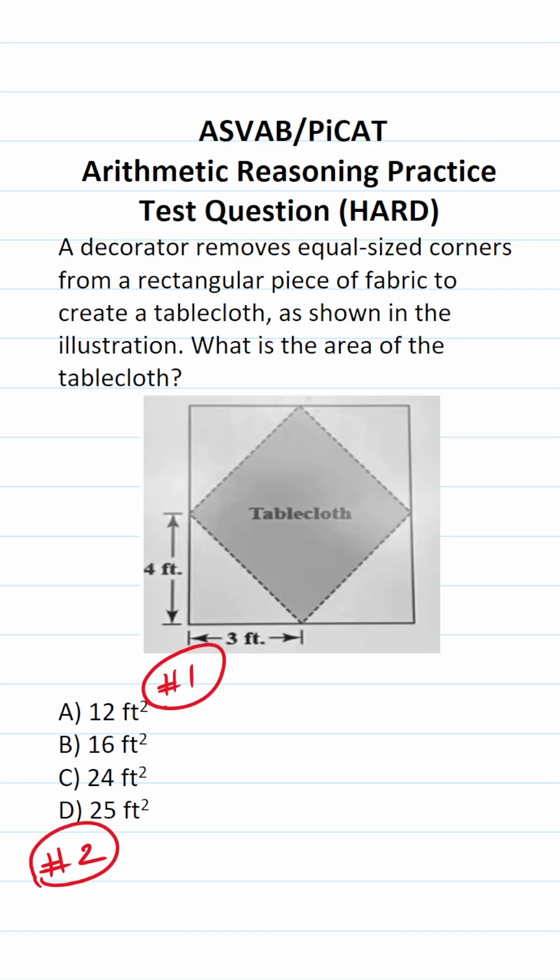So for the first way, we're trying to find the area of the tablecloth. We know that we're going to have the area of a rectangle, and from that we're going to subtract four times the area of one of these triangular corners.